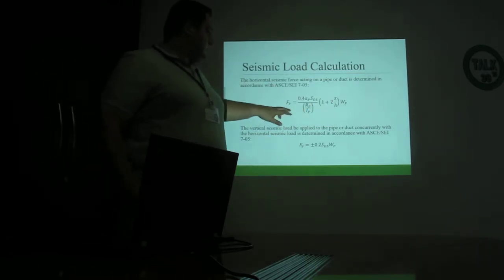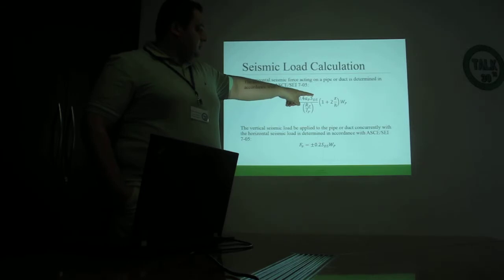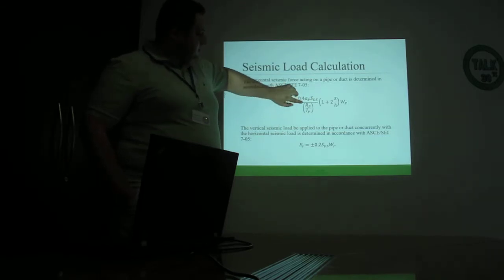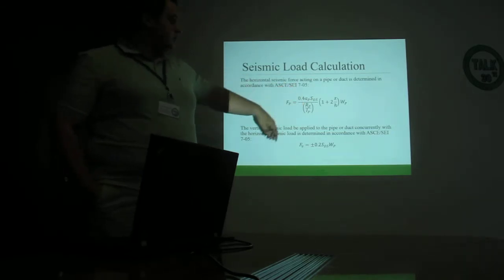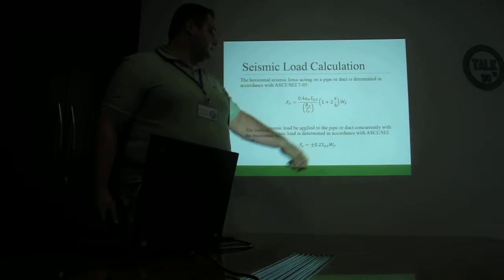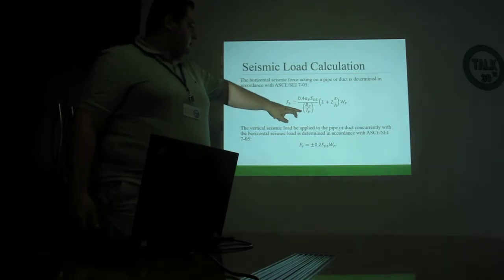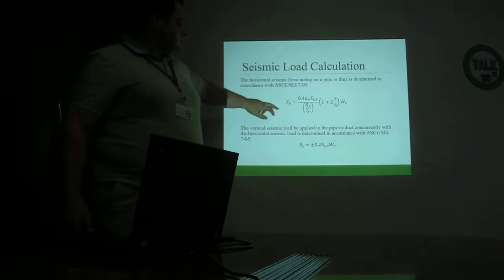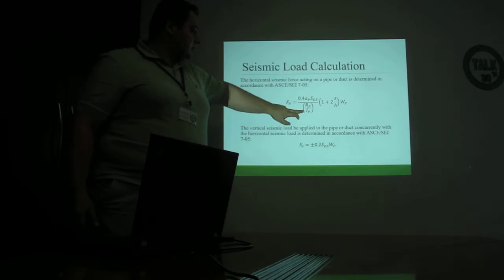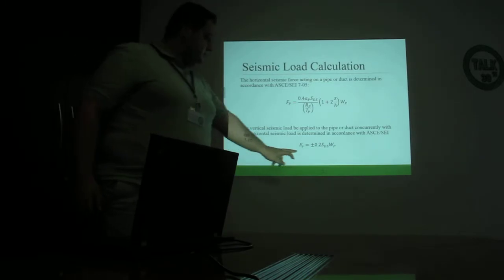The ASCE equations for calculation of horizontal and vertical earthquake loads on the pipe structure take the form FP equals a constant times the weight of the pipe. This constant depends on the natural frequency of the system, the site response to earthquakes, and how ductile the piping system is. The variable Z is at which level the piping is located within the building height. The most important factor is IP, the importance factor, which determines whether seismic restraints are required. For low-importance systems like HVAC, IP is set to 1, while firefighting systems get an IP of 1.5. The vertical load is simply a coefficient times the weight.